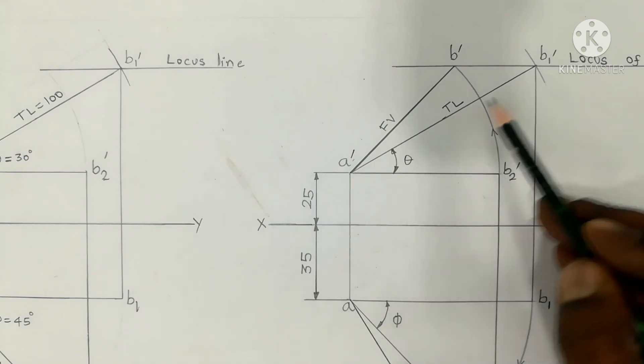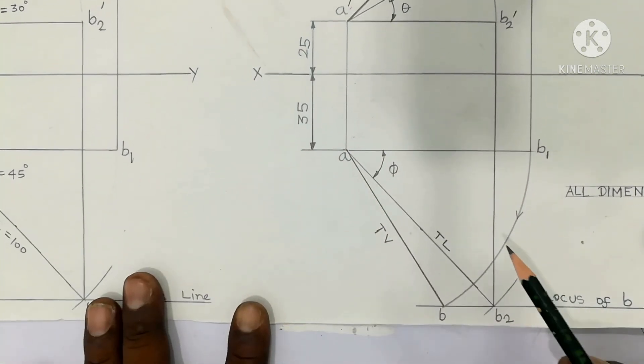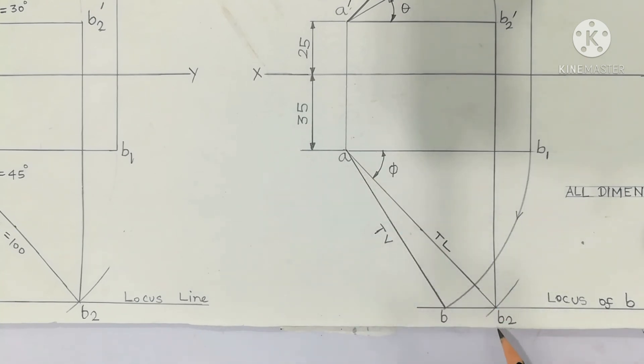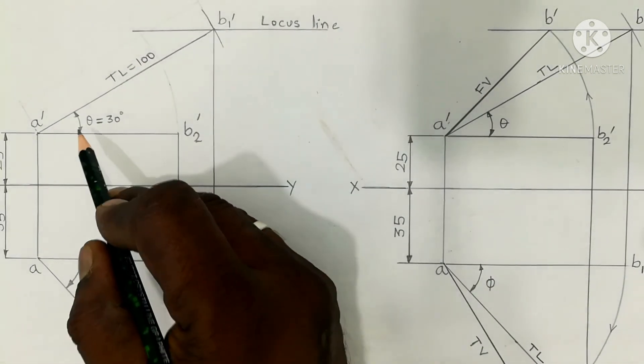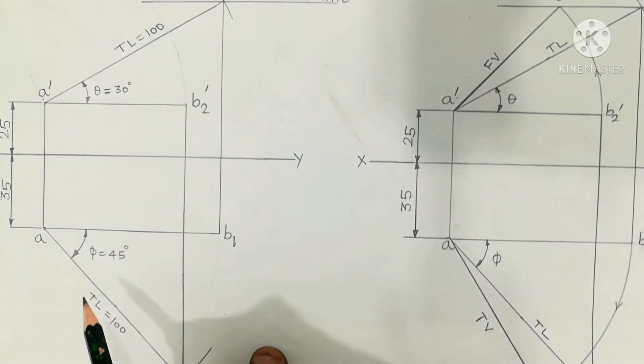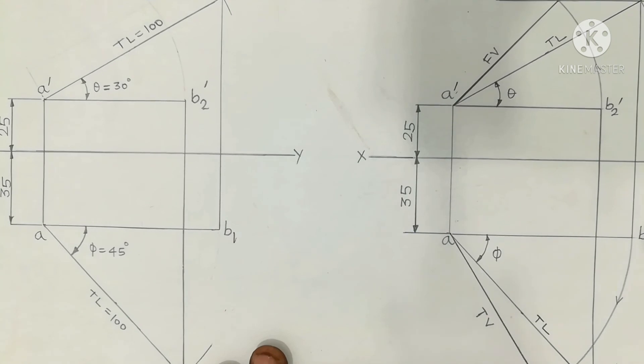A prime B1 prime is the true length of the line. Top view AB2 is the true length of the line. This is the notation point theta inclination with HP 30 degrees. Question and find true inclination with VP 45 degrees.